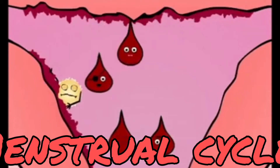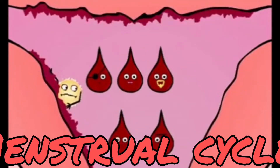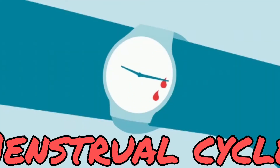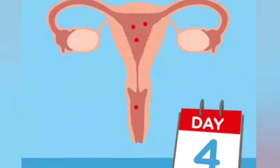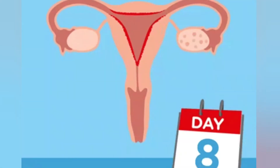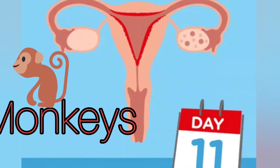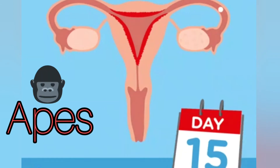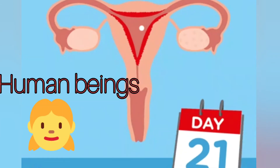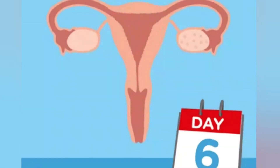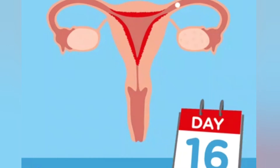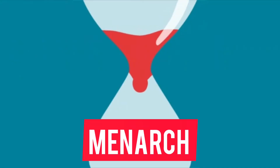Today's topic is the menstrual cycle. The menstrual cycle is the rhythmic series of changes that occur in the reproductive organs of female primates — primates include monkeys, apes, and human beings. It is a repeated cycle at an average interval of about 28 to 29 days. The first appearance of the menstrual cycle at puberty is called menarche.